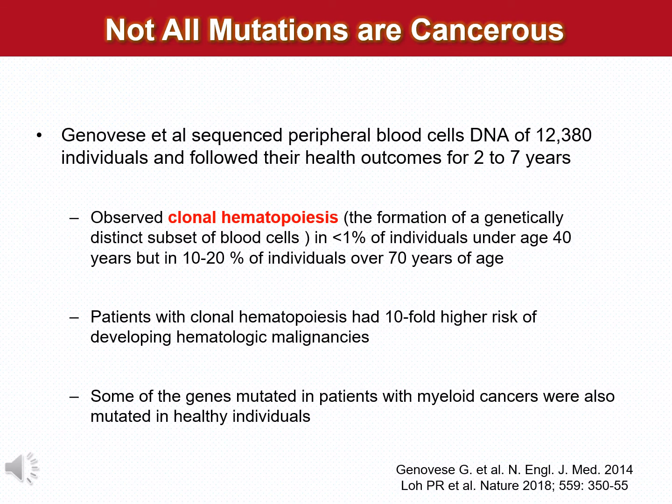As I have indicated before, the specificity of any cancer detection test is of paramount importance. It was originally thought that normal individuals do not have any mutations in their circulating DNA. However, recent studies have identified a precancerous condition called clonal hematopoiesis, in which about 1% of individuals under the age of 40 and 10 to 20% of individuals over the age of 70 harbor mutations in some genes. While these mutations may be inconsequential in most people, a small percentage of these individuals develop hematologic malignancies in the future.